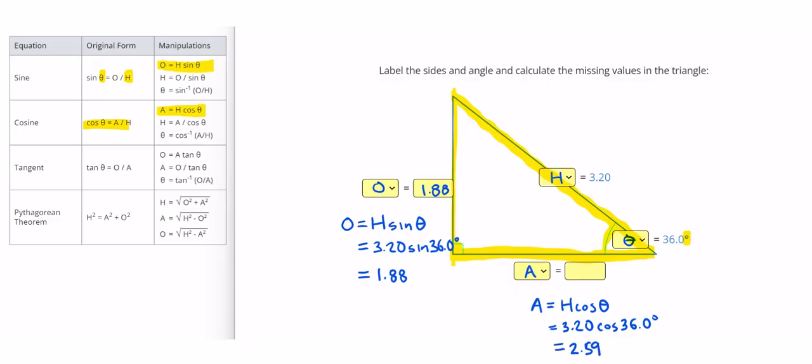Keeping three significant figures, I feel good about that answer because A definitely needs to be less than H. And in this case, A looks like it should be longer than O.